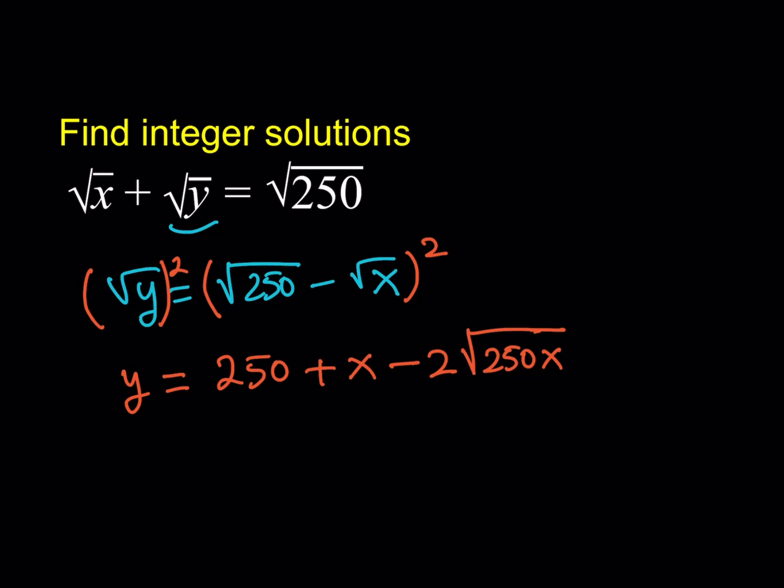Now this can be simplified obviously because 250 can be broken down. How do we break it down so that we have a perfect square? Well 25 is a perfect square so I can definitely write it as 25 times 10. And the square root of 25 is going to be 5 so that will be multiplied by the 2. So from here I should be getting something like 2 times 5 which is 10 times the square root of 10x.